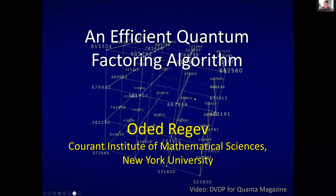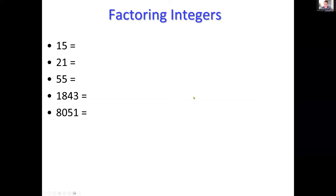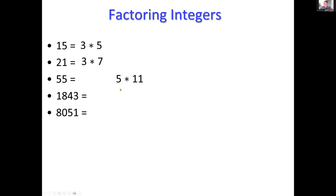I'm not sure if it's needed for this audience, but let me remind you what factoring integers is all about. If you have a number like 15, you want to know it's 3 times 5. Then 21 is 3 times 7, 55 is 5 times 11. But as numbers become bigger it's more challenging — 1843, for instance, is 97 times 90.